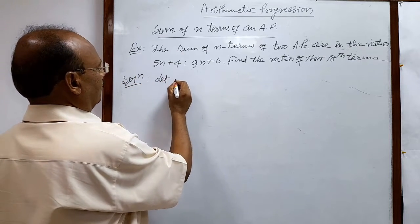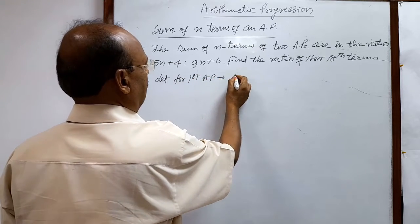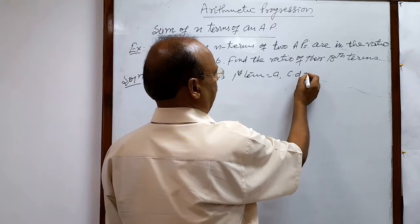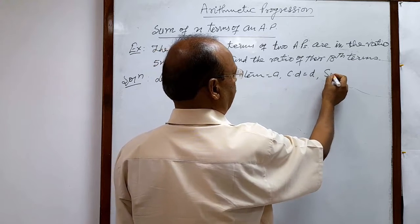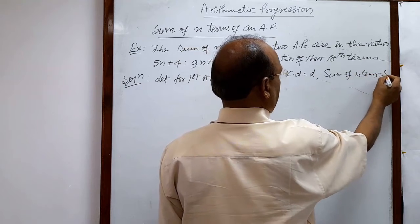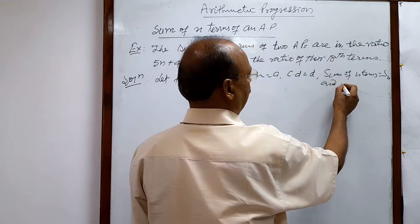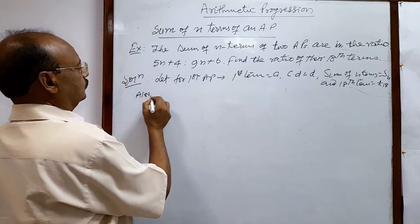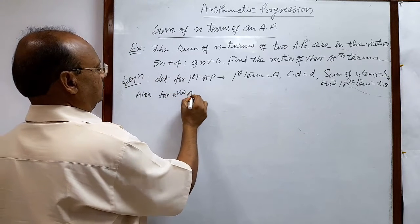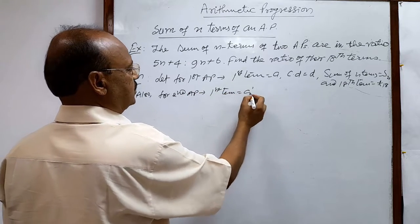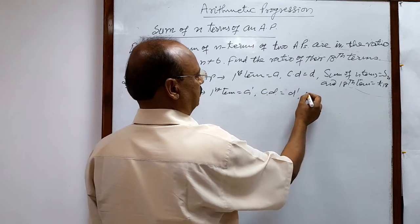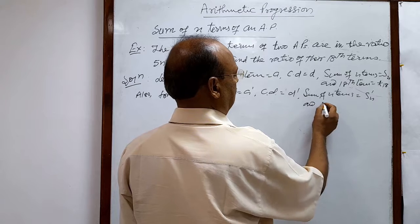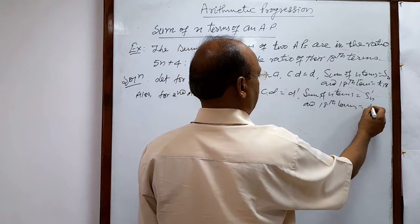Let for first AP, first term be a, common difference be d, sum of n terms be Sn, and 18th term we take suppose t18. Also, for second AP suppose first term be a dashed, common difference means suppose d dashed, sum of n terms be suppose Sn dashed and 18th term suppose t18 dashed.